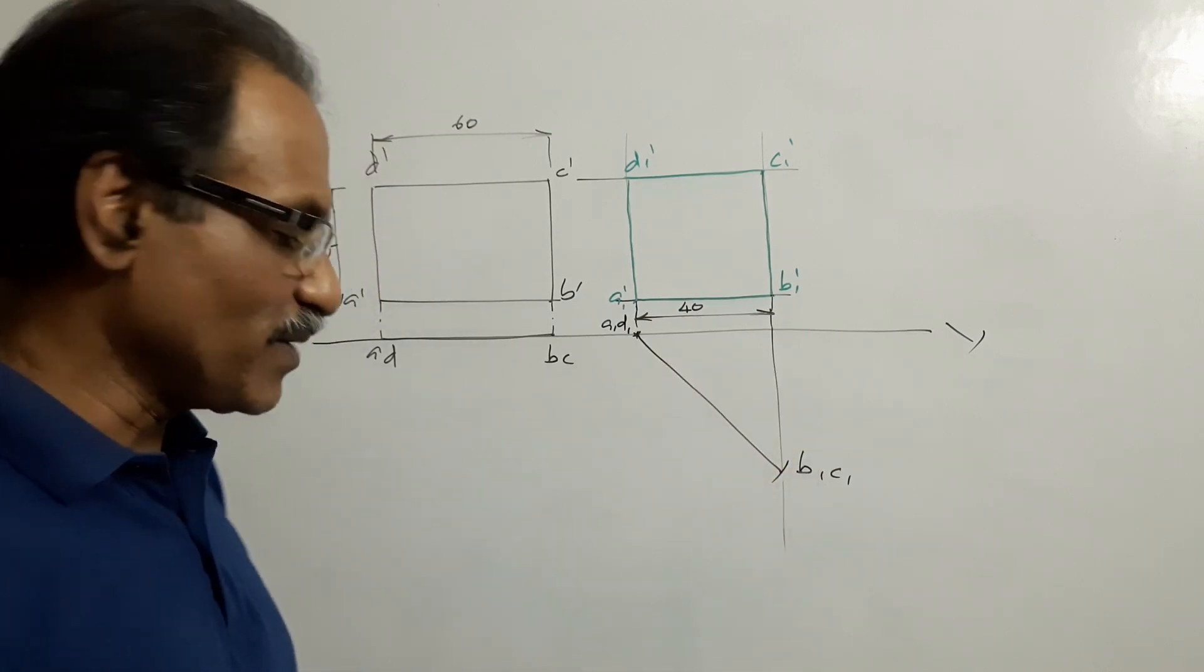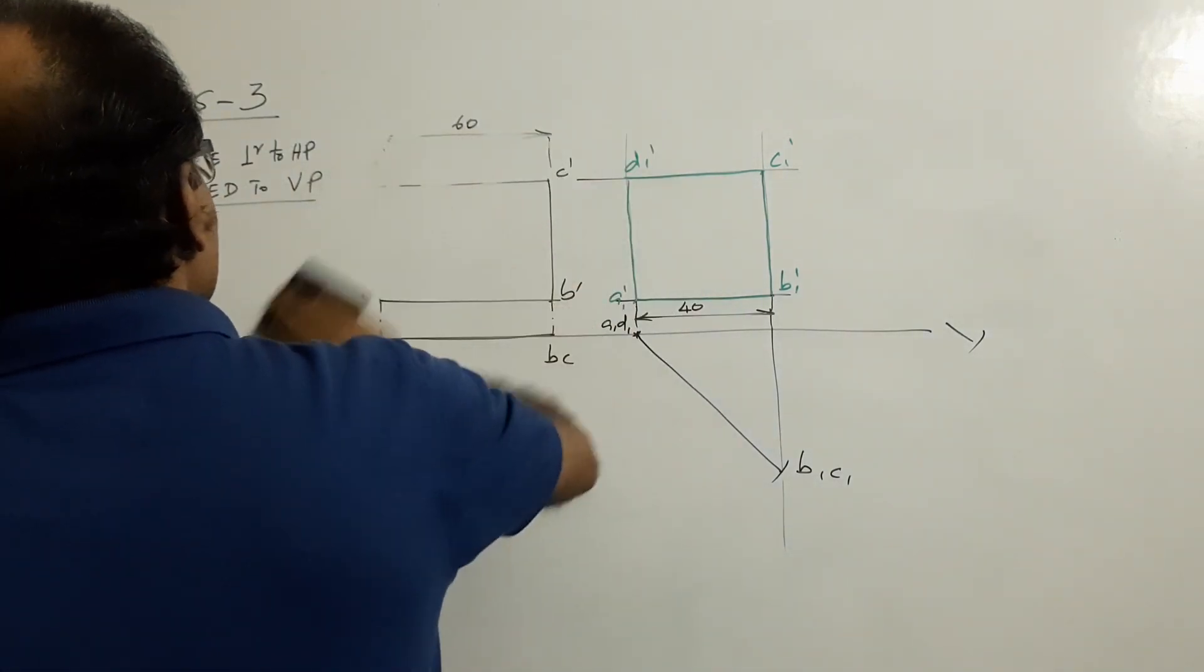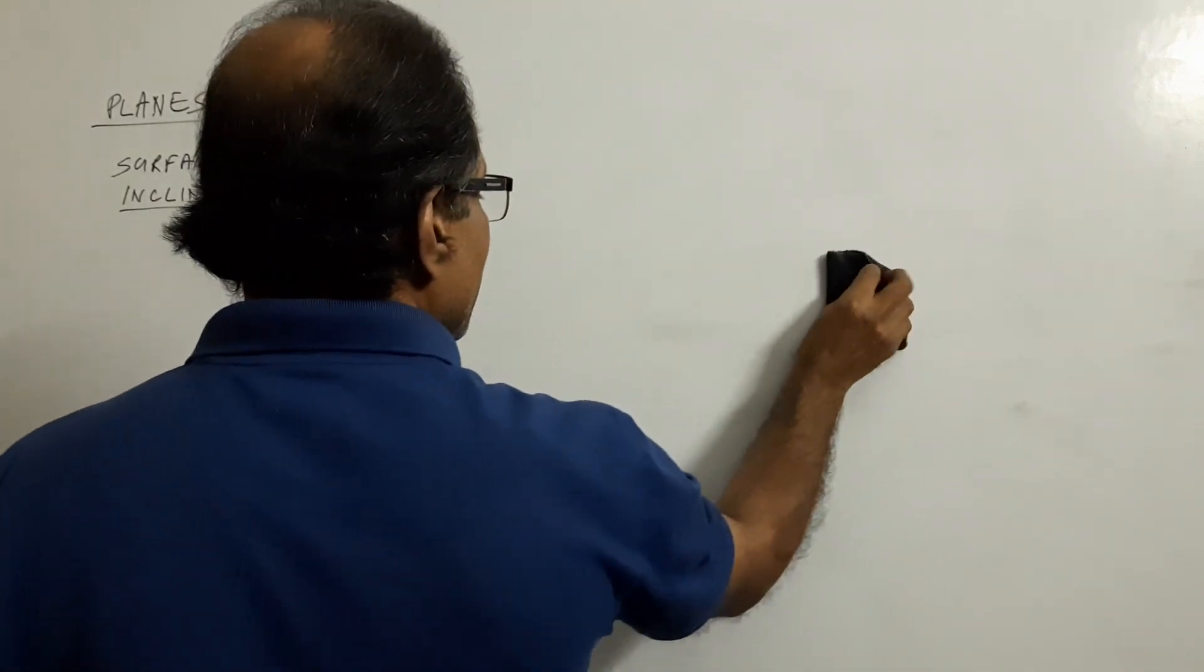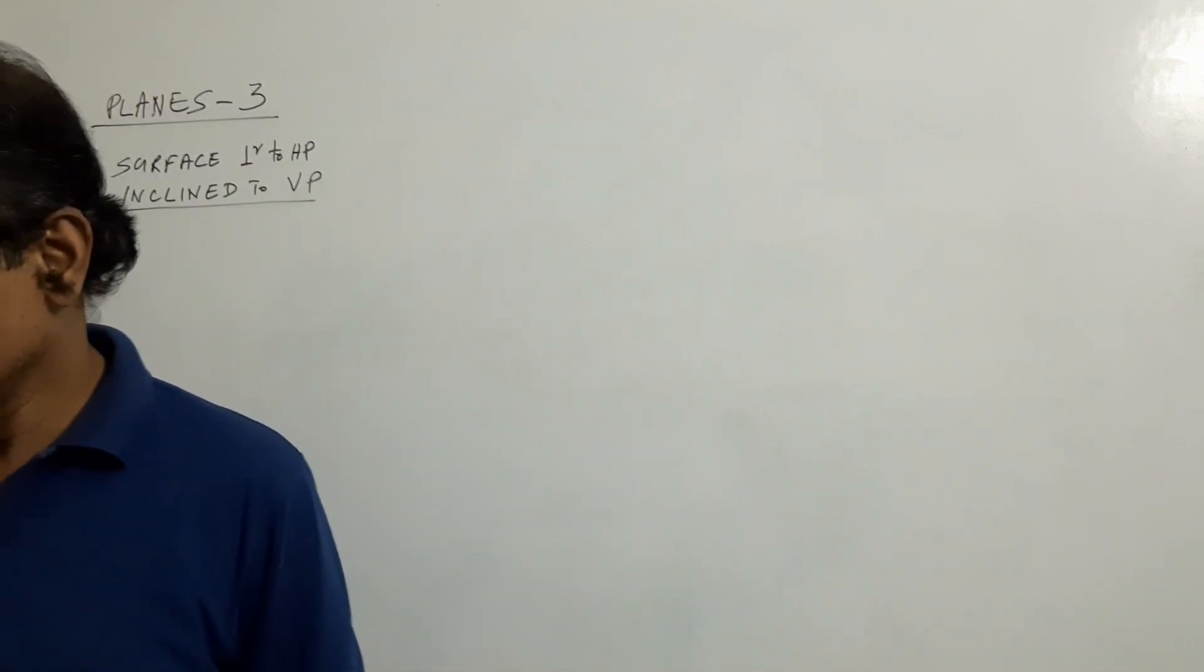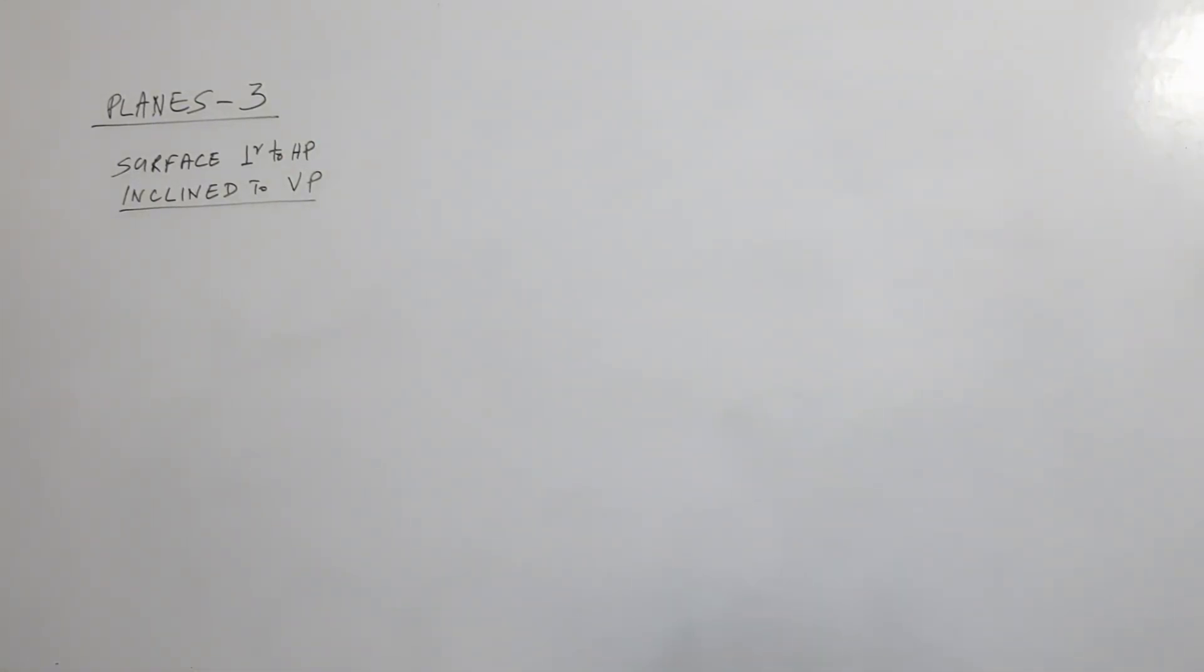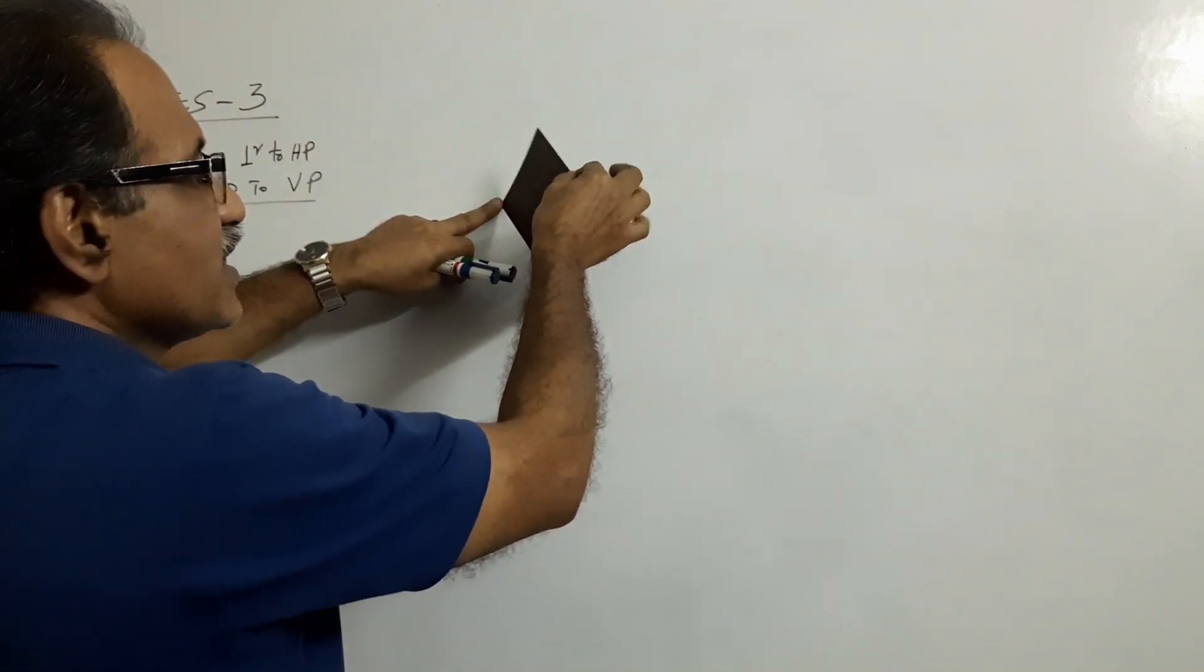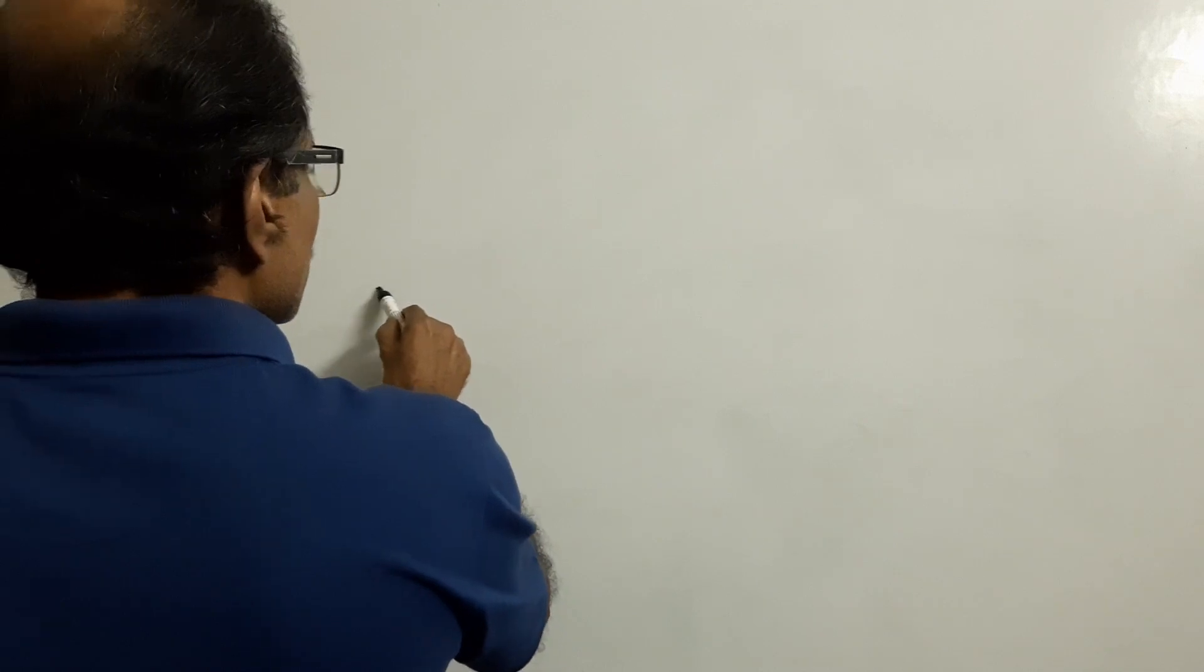Second problem, we will do a square. Second problem is a square 70 mm diagonals. A square of 70 mm diagonals rests on VP on a corner. Rest on VP on a corner in such a way that its front view is a rhombus of 70-40 diagonals. Keep it like this, pull it so that this diagonal becomes smaller, 40. Agreed? Very similar question actually it is.